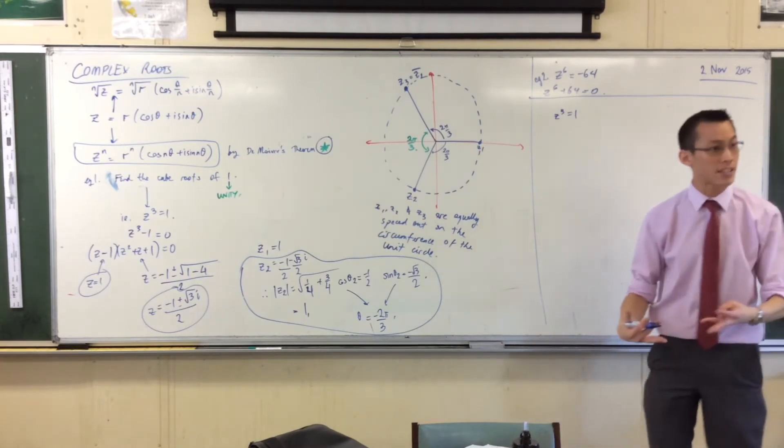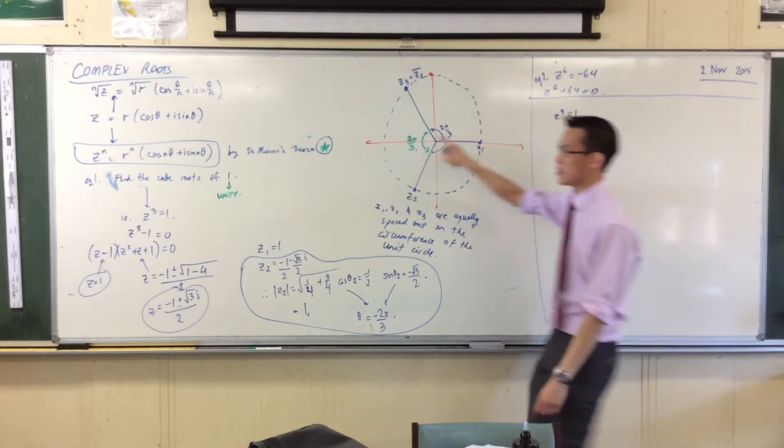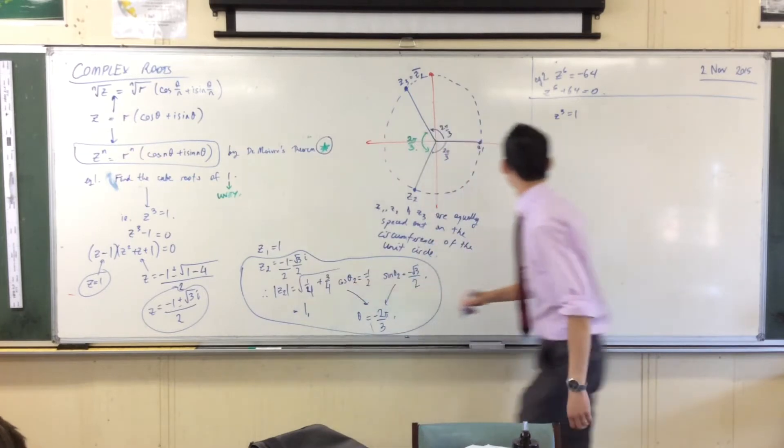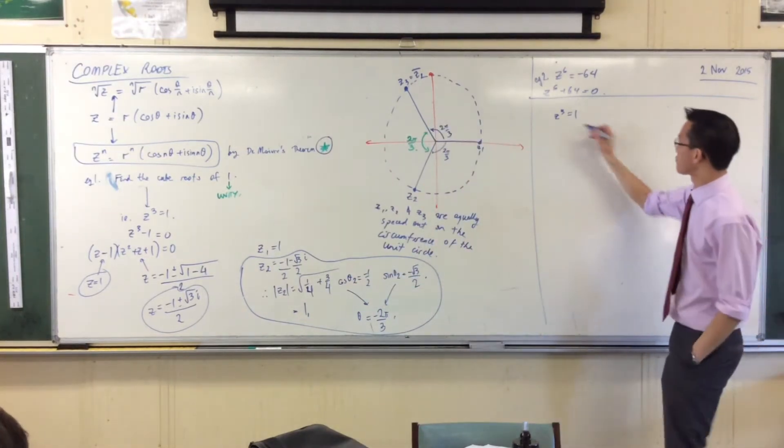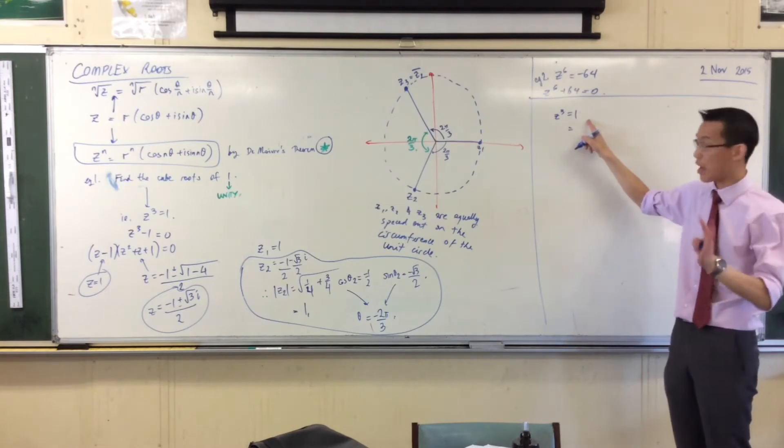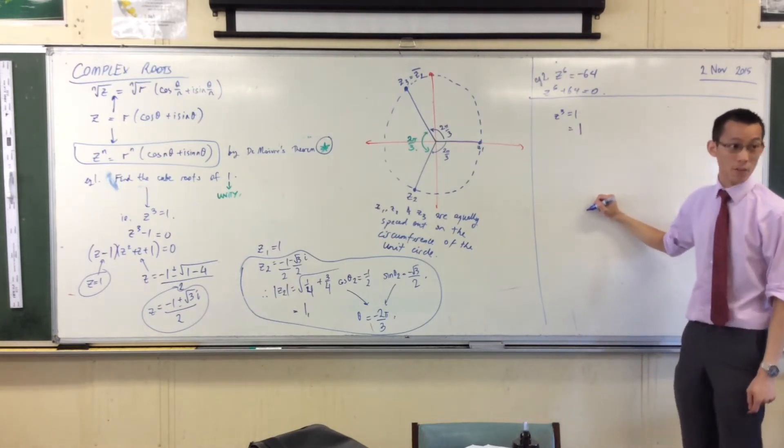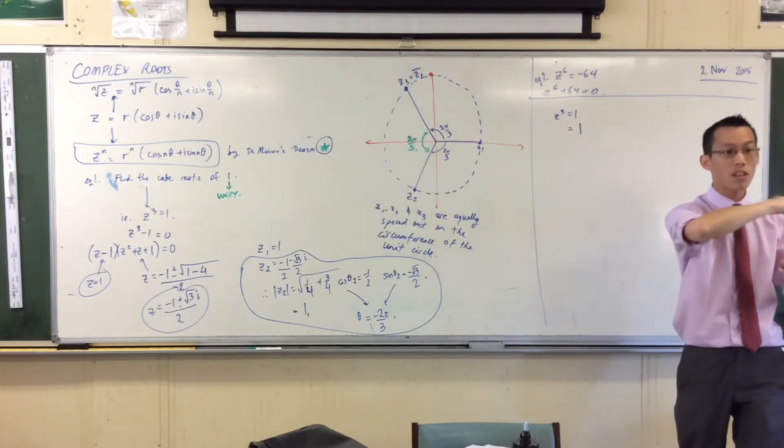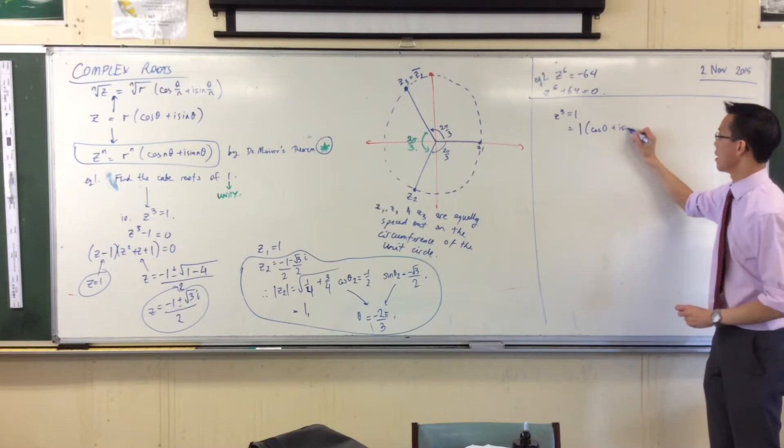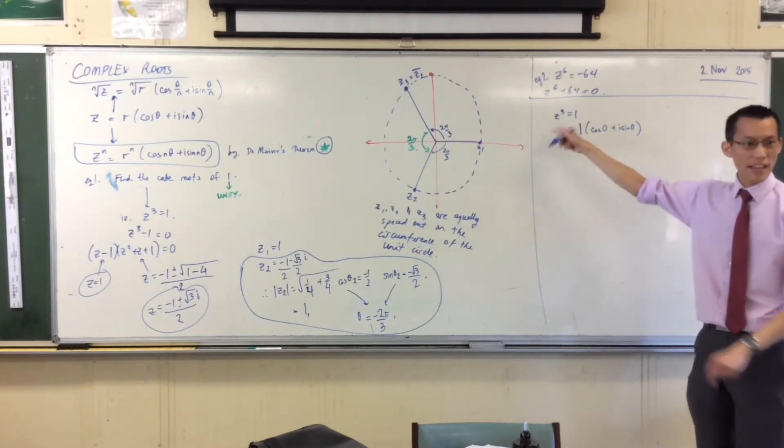I've got z cubed equals 1. Instead of moving the 1 over and trying to factorize, I'm going straight with this. I need 1 as a polar form complex number. The modulus is 1, the argument is 0 because I'm on the positive real axis, so I write that as cos(0) + i·sin(0).